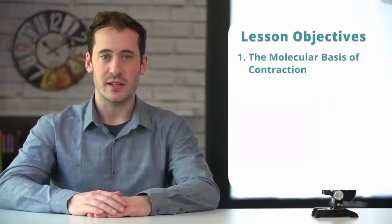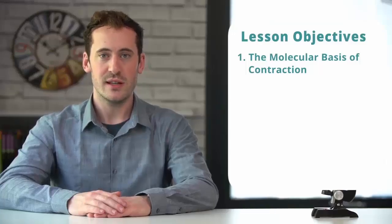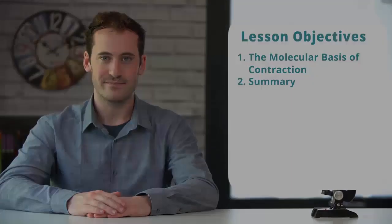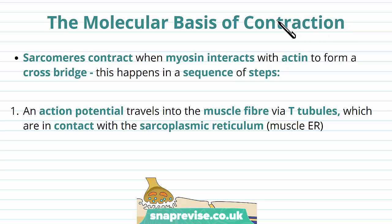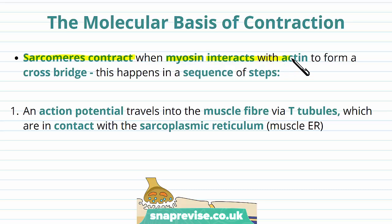In this video we'll be looking at the molecular basis of contraction, and then we'll finish with a summary. The way that muscles contract uses an important sequence of events which involves interaction of particular molecules. The unit of contraction for a muscle is called a sarcomere, and they have to shorten in length or contract for the whole muscle to become shorter. And they do this when myosin, the protein myosin, interacts with the protein actin, and they form an interaction called a cross bridge. This happens in a sequence of steps.